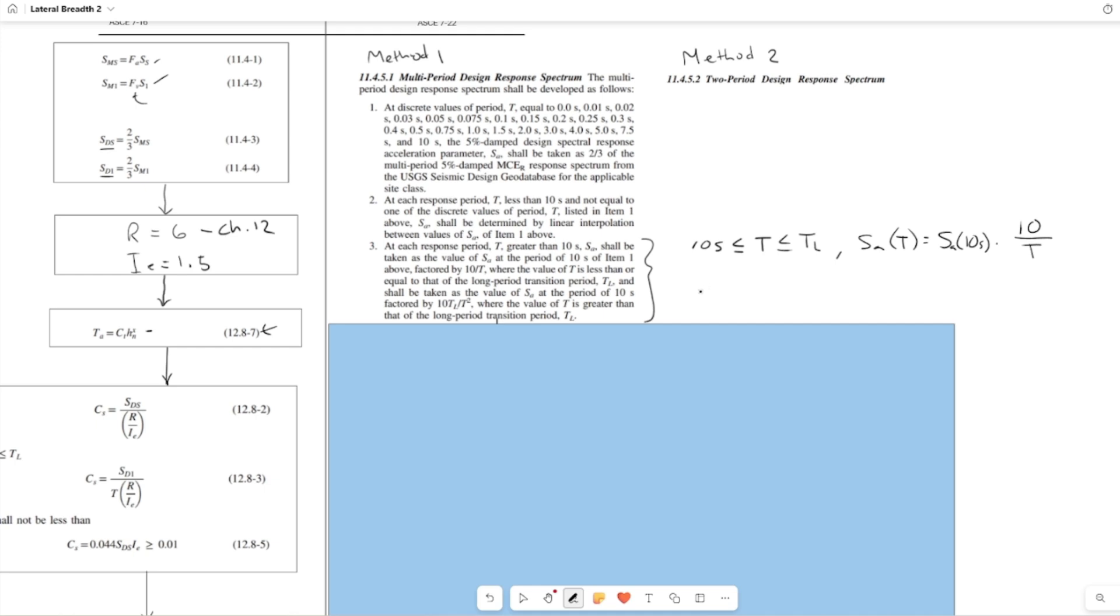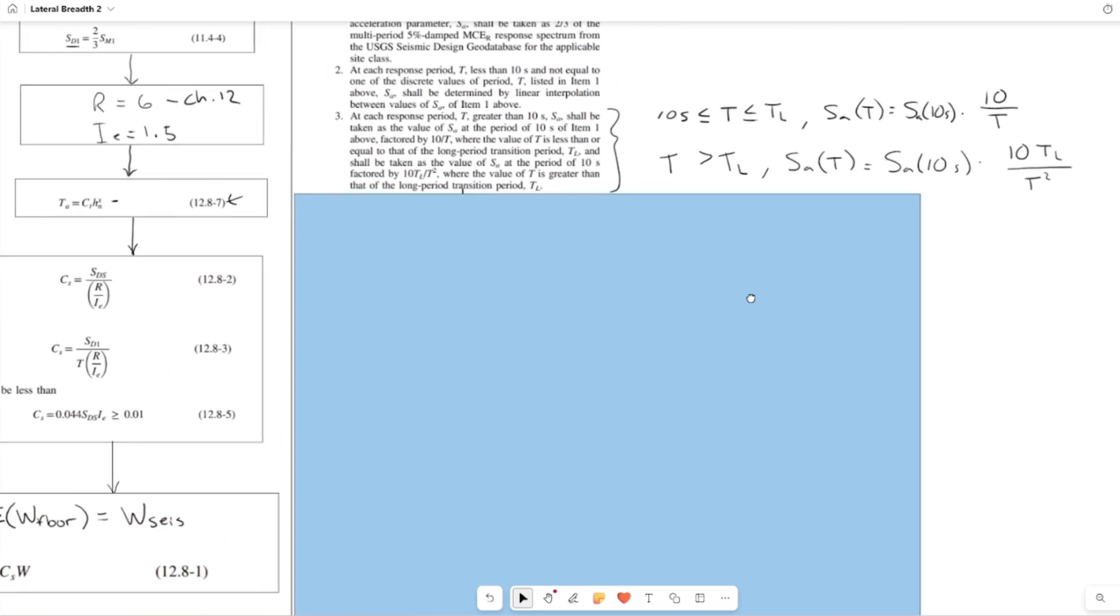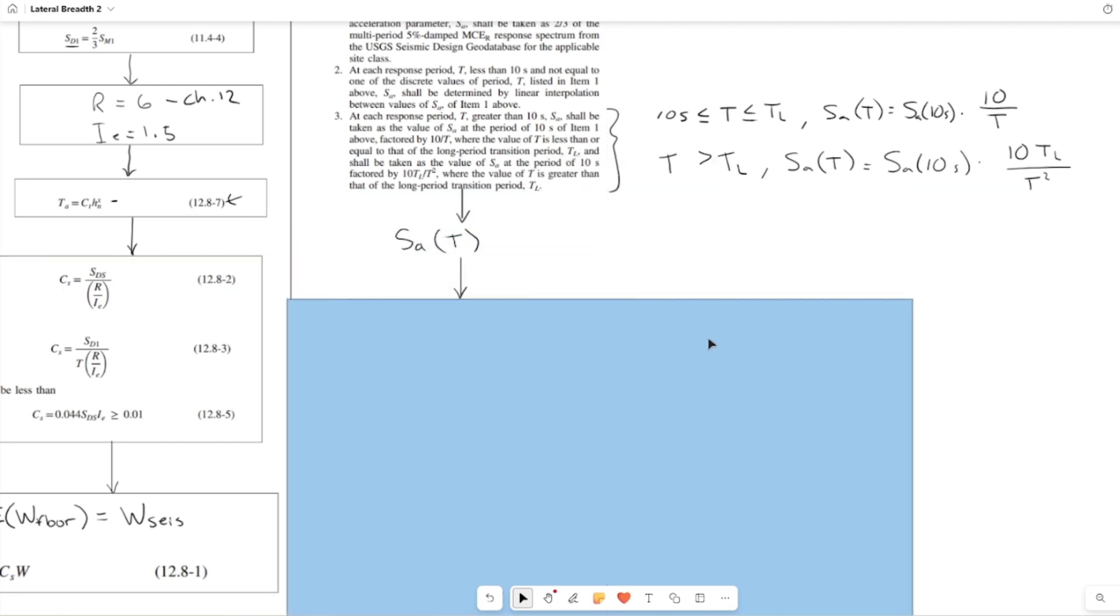The first half of what they're saying is: if your period is between 10 seconds and the long period, s sub a as a function of t is equal to s sub a at 10 seconds times 10 over t. That's all they're saying. The next half is: if your period is larger than t sub l, use a different formula. It uses the same spectral acceleration at 10 seconds, but the multiplier is now 10 times t sub l over t squared. Pretty simple when you write it down. A little harder to wrap your head around if you're used to the old method, but in reality, it's not too difficult.